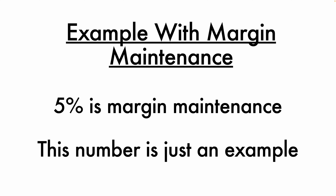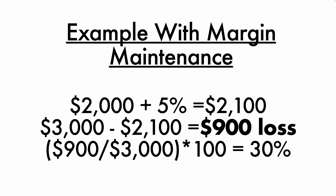Each exchange will have their own requirement, so I'm just using a random number. Exchanges require this so they don't lose money in the event that the market value of your balance plummets. With a margin requirement of 5%, you'll get liquidated when the account balance reaches $2,100 — that's the $2,000 borrowed plus 5%, which is how that extra $100 is calculated. This is a drop of $900, or 30% on your position.